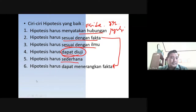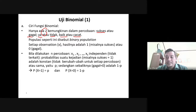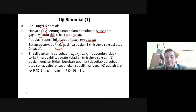Selanjutnya kita fokus ke uji hipotesis untuk distribusi binomial. Kita ingat kembali ciri-ciri dari distribusi binomial: itu ada dua kemungkinan, yaitu sukses atau gagal, ya atau tidak, baik atau cacat, misalnya terkait produksi dan sebagainya. Populasi dari distribusi binomial itu disebut dengan binary population, jadi hanya ada dua. Setiap hasil observasi yang disimbolkan dengan nilai X hasilnya adalah satu untuk sukses dan nol untuk gagal.